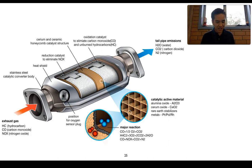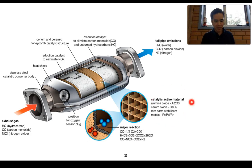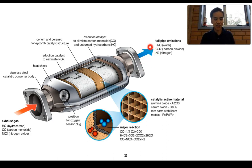The reactions taking place are: carbon monoxide reacts with oxygen to produce carbon dioxide; unburnt hydrocarbons react with oxygen to produce water and carbon dioxide; and nitrogen oxides react with carbon monoxide to produce less harmful carbon dioxide and nitrogen gas. Once through the catalytic converter, we get the emission of less harmful water, carbon dioxide, and nitrogen gas.